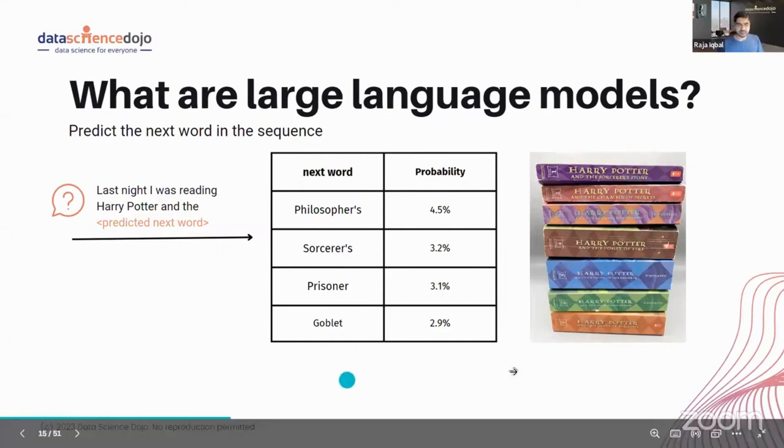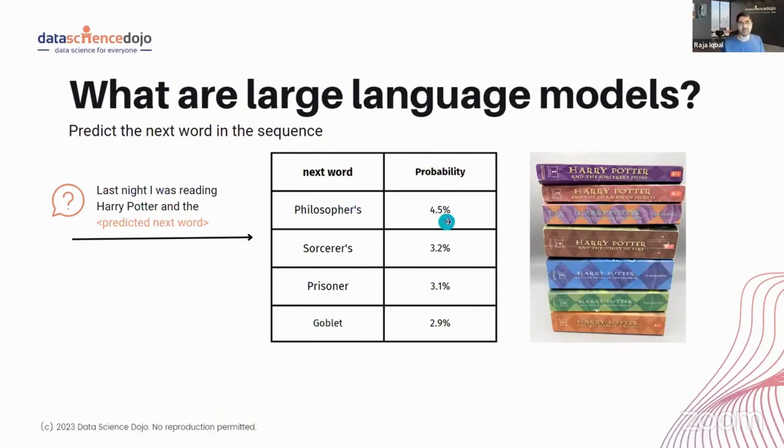And if I look at these books, the word philosopher - these are made of probabilities, they don't indicate any real numbers here - Harry Potter and the Philosopher's 4.5%, Sorcerer's 3.2%, and Prisoner 3.1%. So these are all the Harry Potter books, and I know what is the next most likely word.